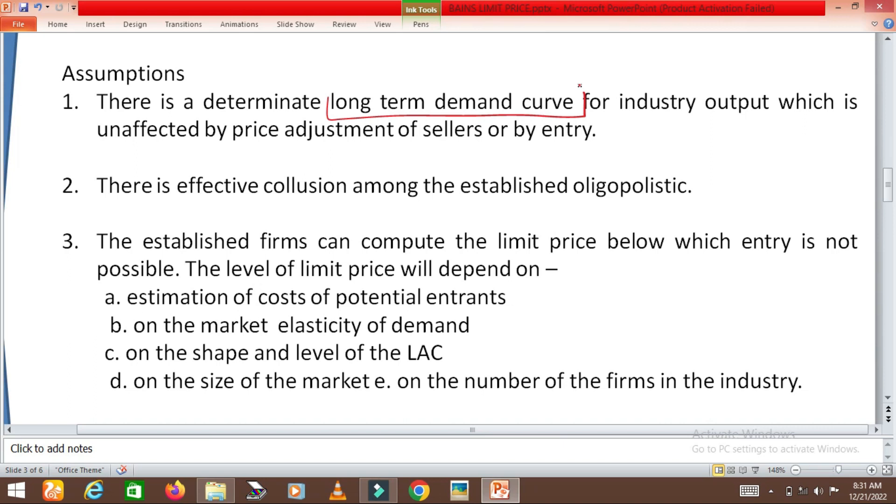Second assumption is there is effective collusion among the established oligopolists. The sellers which are existing in the market already make collusion and the collusion is very strong among the firms which are already existing in the market.